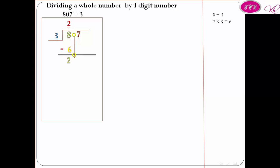Bring down 0. 20 divided by 3. 6 times 3 equals 18. 6 above 0. 6 times 3 equals 18.